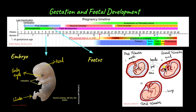During the second trimester, the organs are more developed, and the limbs are more developed as well. Towards the end of the second trimester, around 26-27 weeks, movements of the baby can be felt. At the end of the third trimester, finishing touches are added to the developing organs. Lungs are fully developed but they are non-functional till the baby is born.